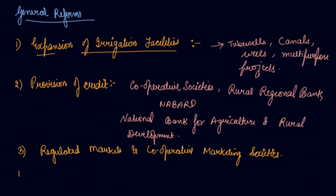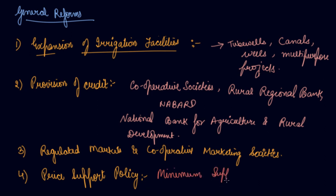The fourth general reform is the price support policy. The government has introduced the Minimum Support Price (MSP), which is the minimum price guaranteed to farmers for selling their produce. To motivate farmers to increase farm output, it is necessary to protect them against market uncertainties such as fluctuations in demand and supply. The government will definitely pay at least the MSP to the farmer for their produce.